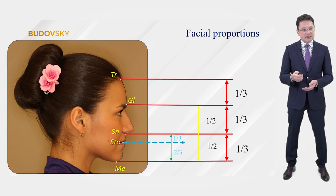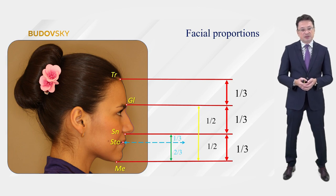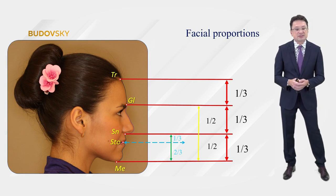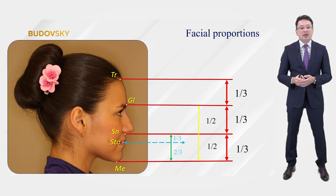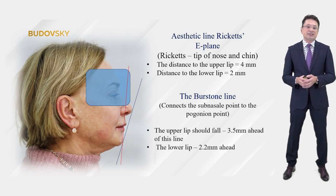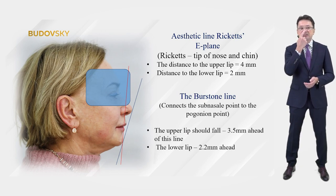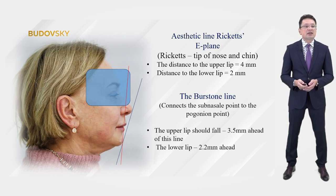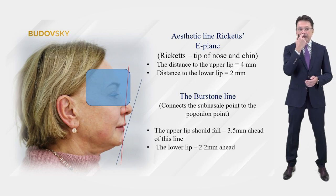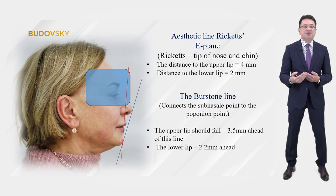The lower third, from the subnasion point to the menton, is divided through the point of the stomion, so that the distance from the subnasion to the stomion is one-third of the lower part of the face, and from the stomion to the menton is two-thirds. Also, the distance between glabella and menton is divided in half by the point of the subnasion. Additional aesthetic lines include the E-plane — the aesthetic line of Ricketts — connecting the tip of the nose and the chin, and the Burst line, which connects the subnasion point to the pogonion point, helping us evaluate lip position.